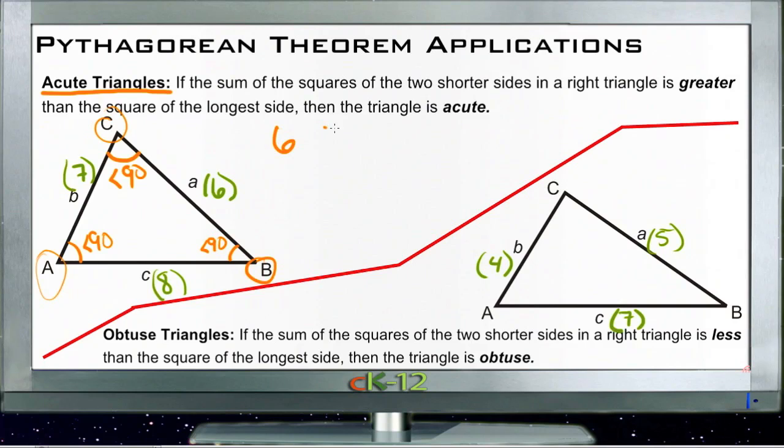6, 7, and 8, and running them through the Pythagorean Theorem. So if we do 6 squared plus 7 squared equals 8 squared, well 6 squared is 36. And 7 squared is 49. 8 squared is 64.